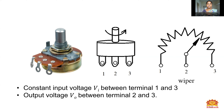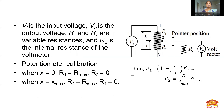The constant input voltage V is applied between terminals 1 and 3. The output voltage V0 is taken between terminals 2 and 3. V is the input voltage, V0 is the output voltage, R1 and R2 are variable resistances, and RL is the internal resistance of the voltmeter. In the circuit diagram, R1 and R2 are shown with RL giving the output voltage. Points one and three are fixed; the R2 value changes with wiper movement.